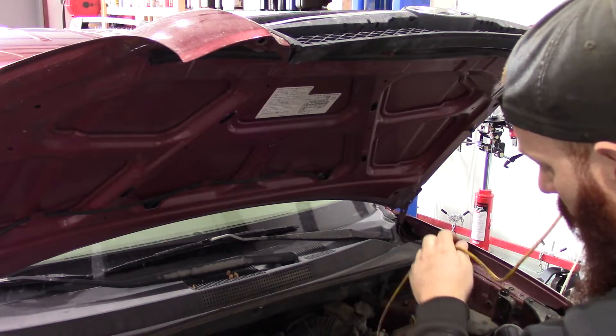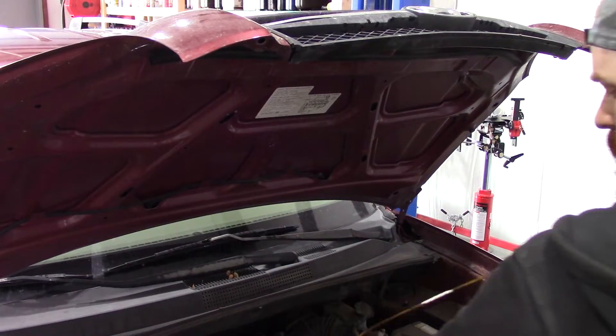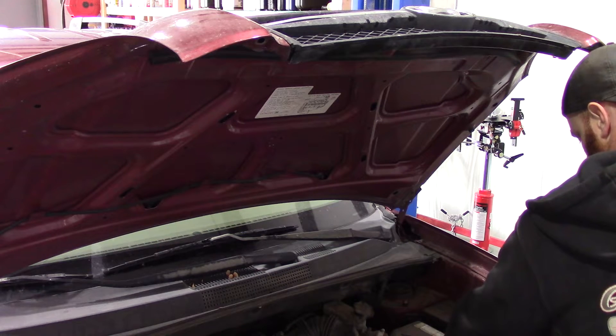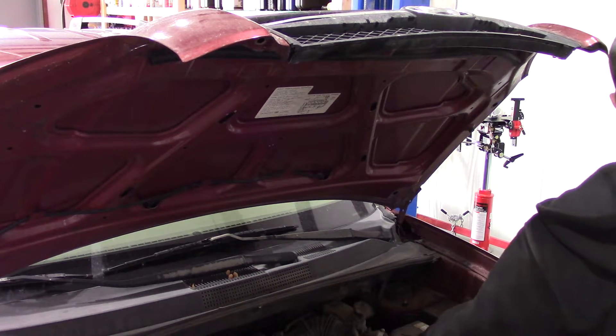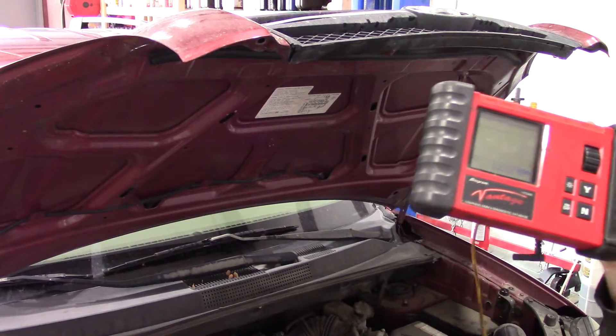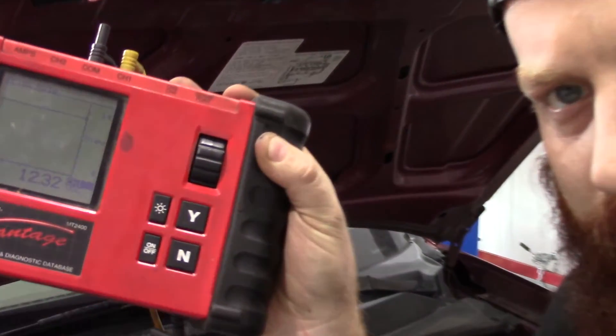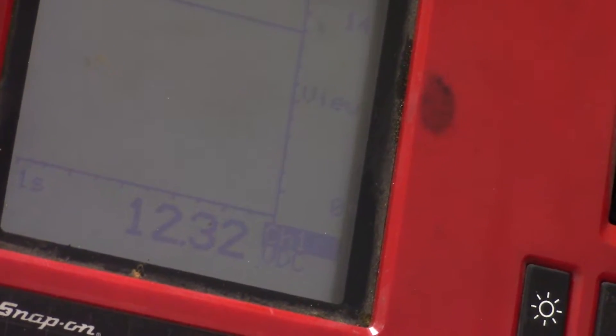Right now we're hooked straight to the battery with both leads, positive and negative. We're unplugging stuff, same as before. That is the meter hooked to the battery. You can see we're sitting at 12.32 volts.